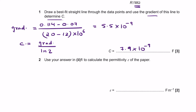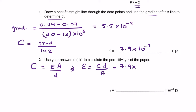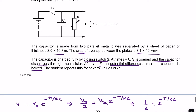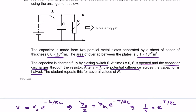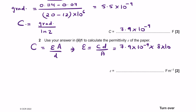Using the capacitance C equals 7.9 times 10⁻⁹ F to find the permittivity of the paper: from C equals ε·A over D, we get ε equals C·D over A. With D equals 8 times 10⁻⁵ metres and A equals 3.1 times 10⁻² metres squared, the permittivity ε equals approximately 2 times 10⁻¹¹ farads per metre.